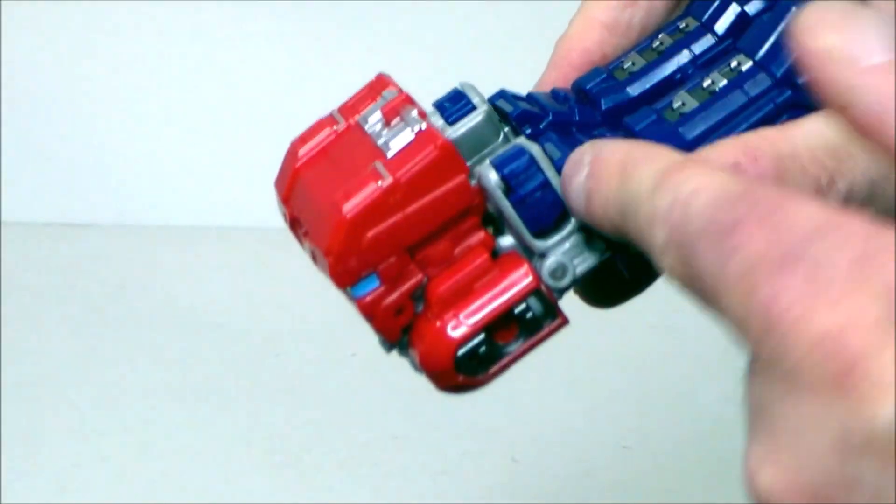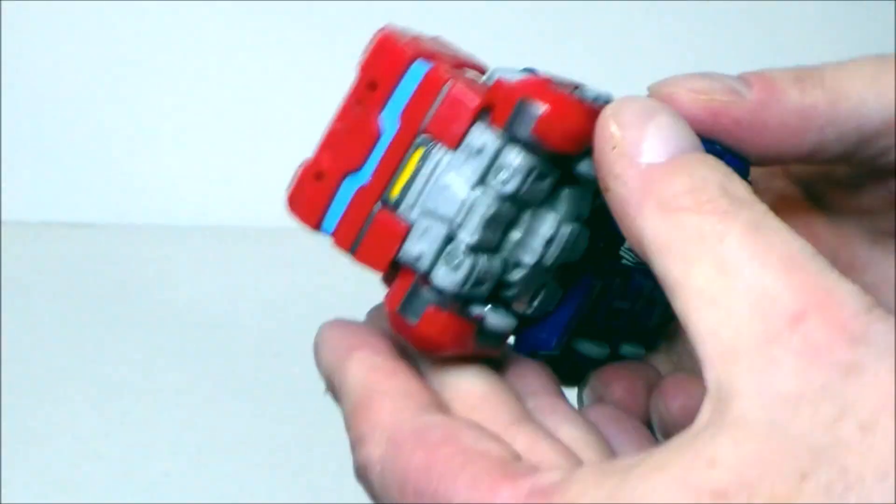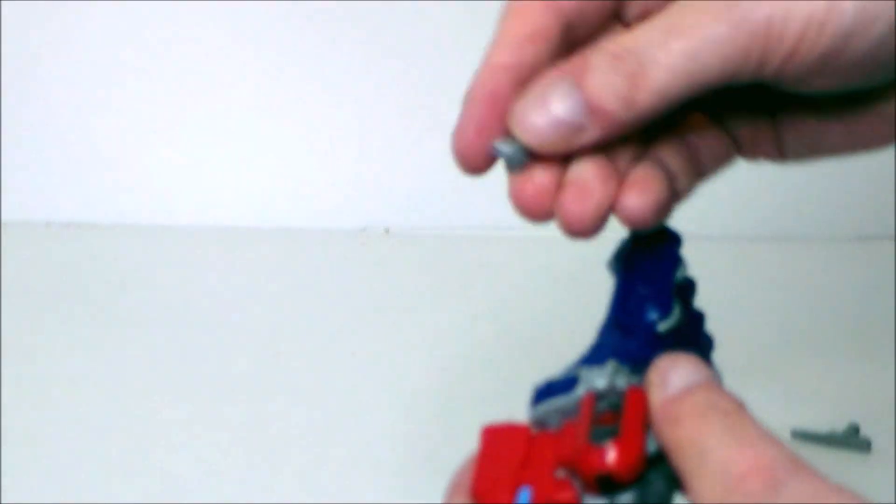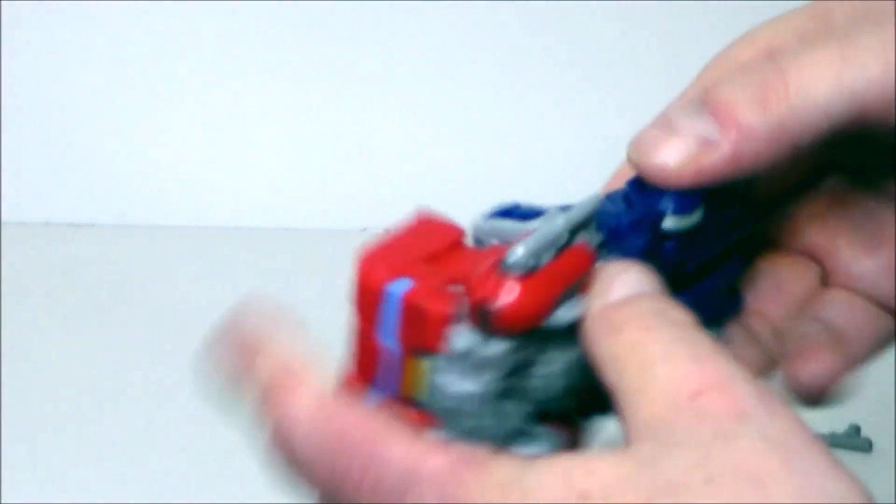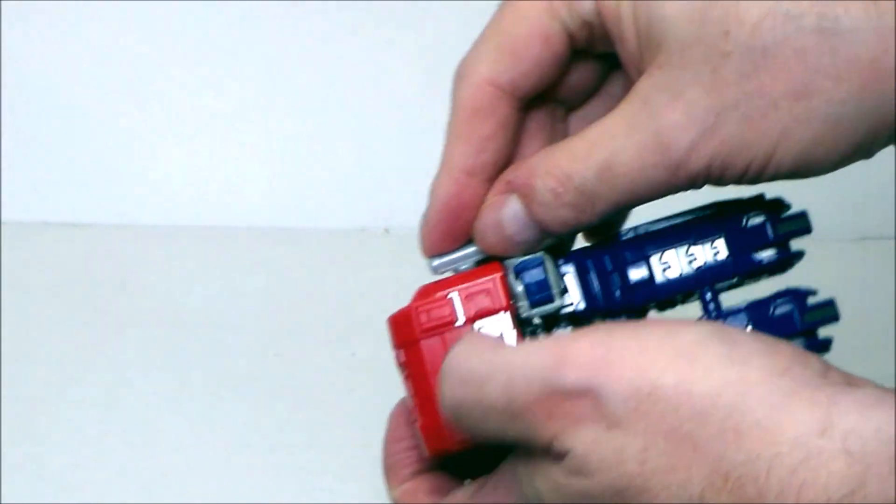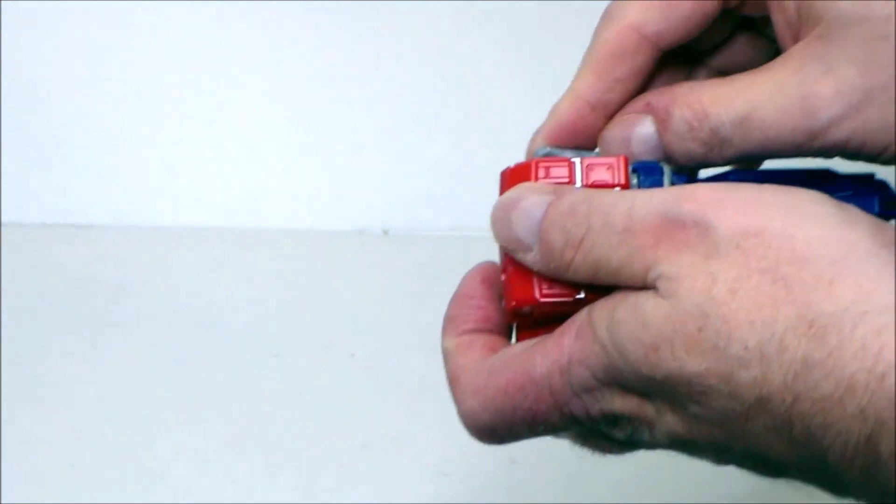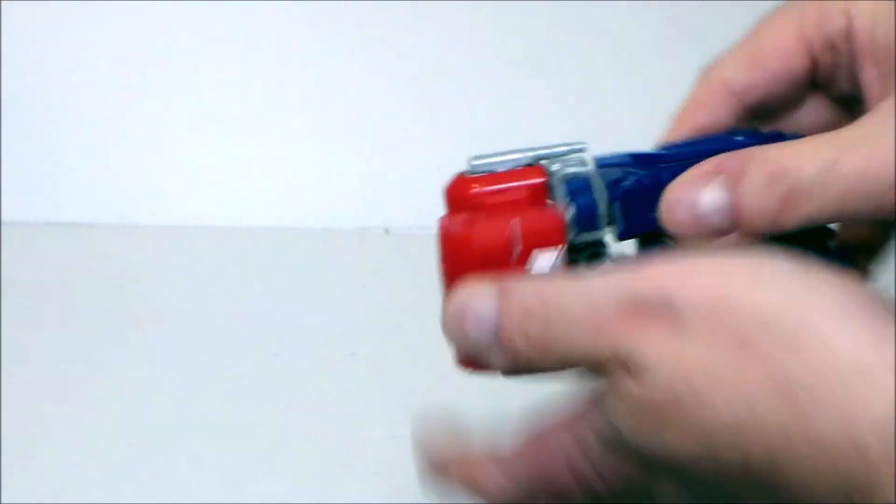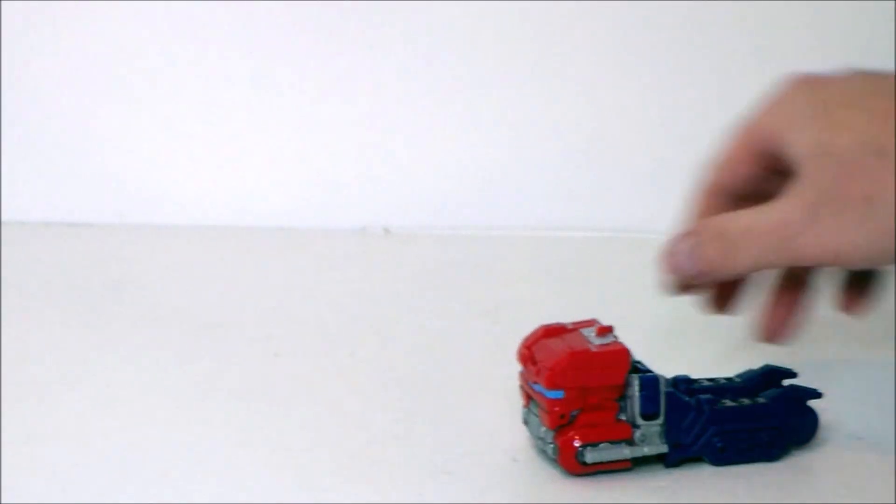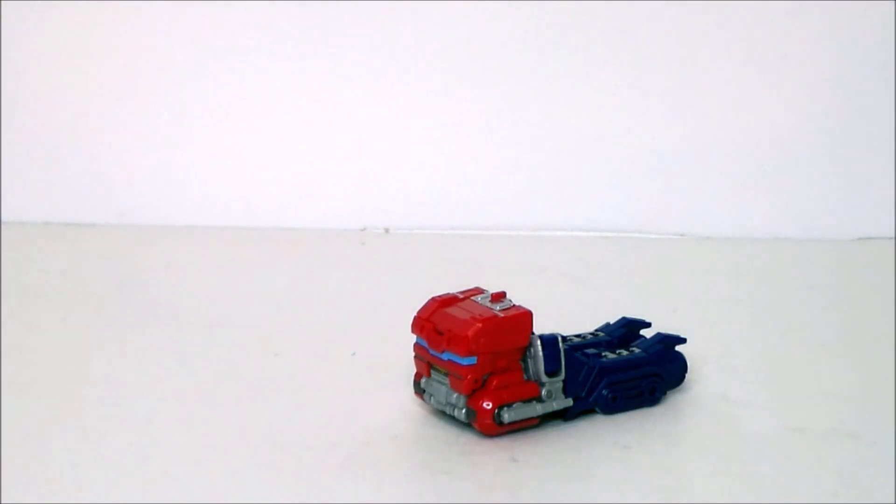So once you get all those connected on, it's really solid. It really is. And then we're going to take the tailpipes. And we're just going to click these on like this. Click this one on as well. Like this. And there we have Optimus Prime in his truck mode.